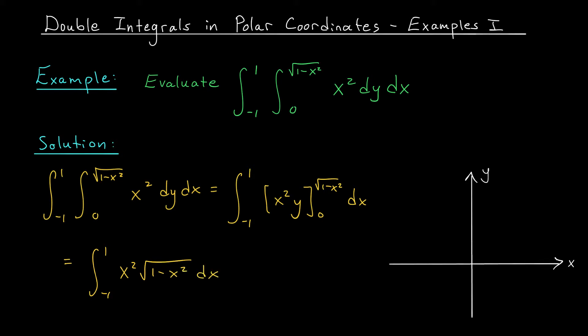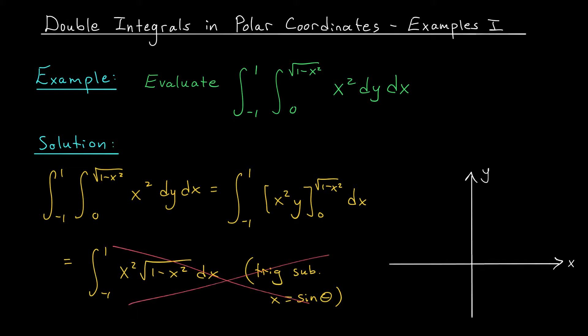Now this integral looks a little bit gross, but it is solvable in Cartesian coordinates. You'd have to use a trig substitution though — you'd set x equal to sin theta, differentiate to find dx, replace the x's in this integral, and things would clean up pretty nicely. However, the integral would still require a little bit of work to solve fully. So rather than going down the road of trig substitutions, which can sometimes be pretty nasty, we're going to try solving this a different way.